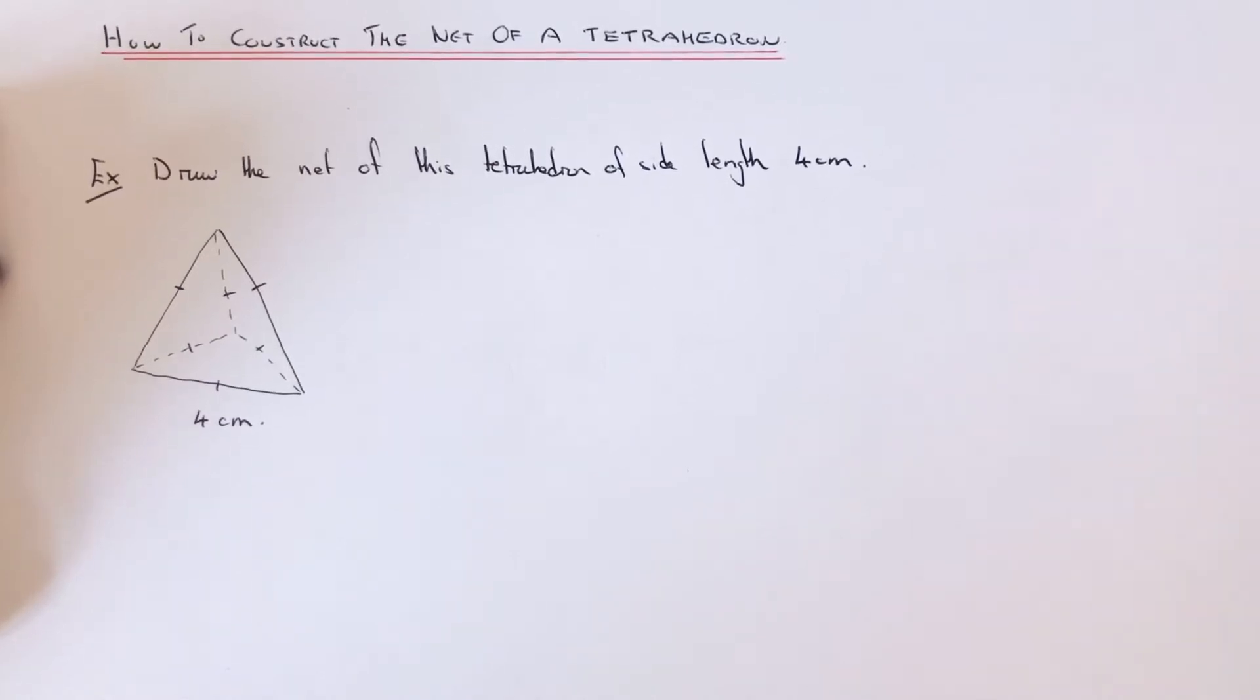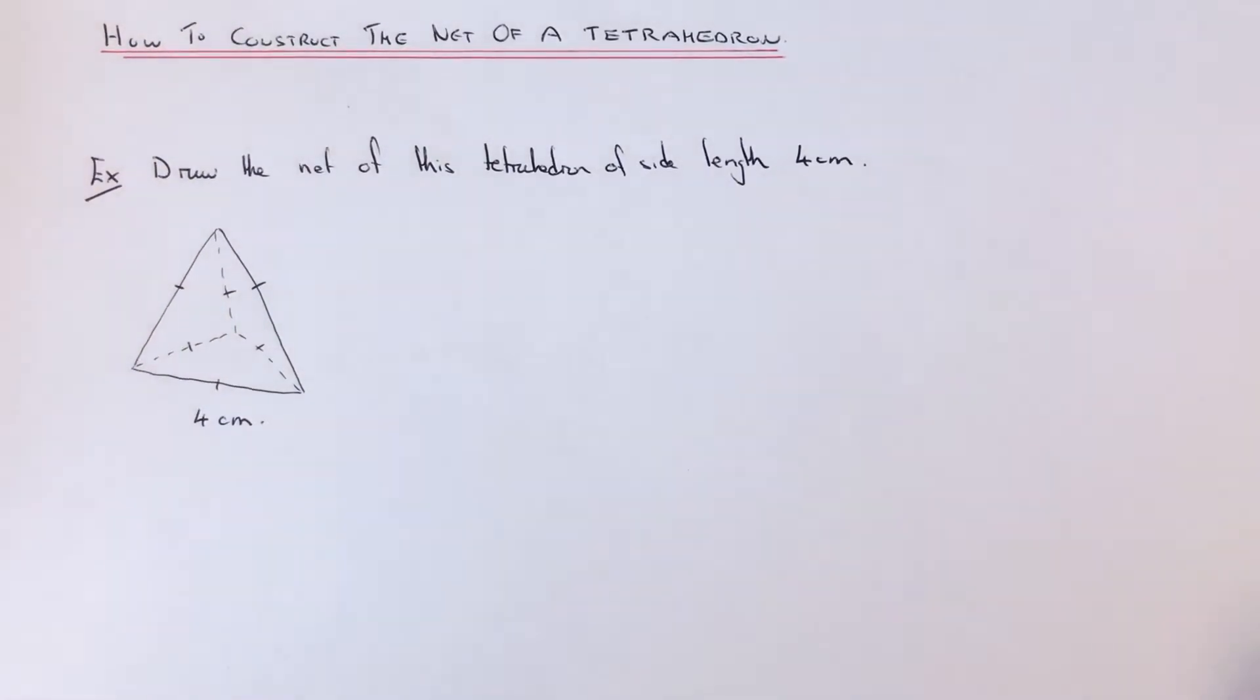Hi guys, welcome back. This is Maths 3000. I'm going to show you how to construct the net of a tetrahedron. The best way to do this is to use a ruler, a compass, and a pencil.